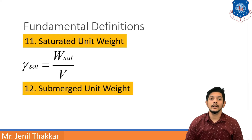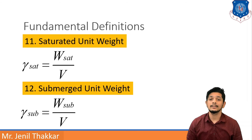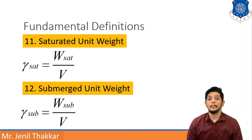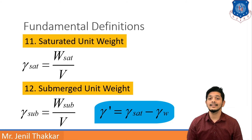The next definition is Submerged Unit Weight. Saturated soil mass means soil full of water with no air, whereas submerged soil mass is partially saturated. Submerged unit weight, written as gamma sub, equals the weight of submerged dry soil solids upon total volume. Its units are also kilonewton per meter cube. Submerged unit weight can further be written as gamma dash, where gamma dash equals gamma saturated minus gamma W — that is, we subtract the unit weight of water from the saturated unit weight.